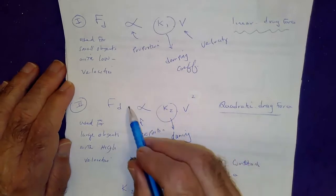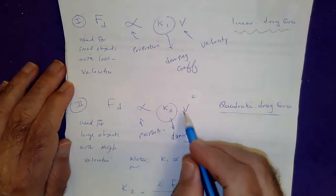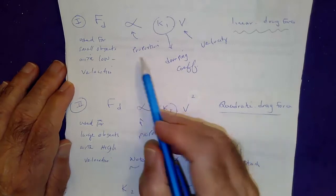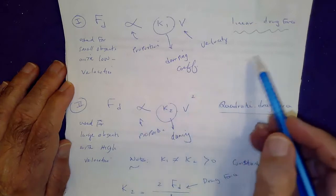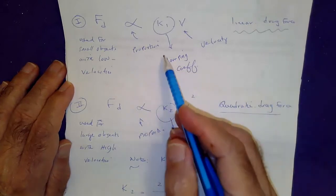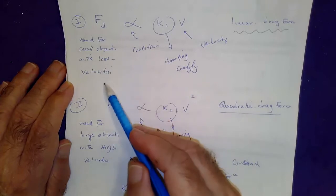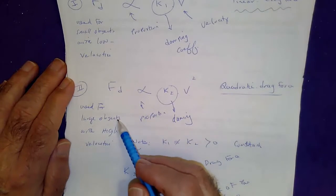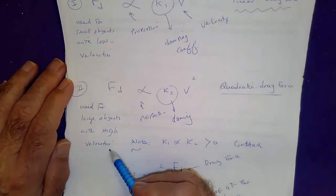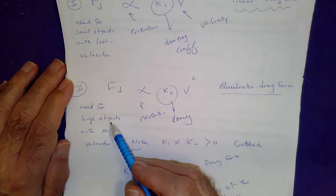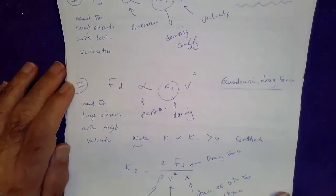If the damping force is proportional to velocity squared, that's called quadratic drag force. So both are drag forces — one is called linear (small objects with low velocity) and the other quadratic (large objects with high velocity). When we say large objects, we're talking about something like a tennis ball, not a truck.